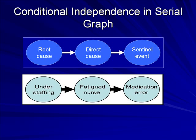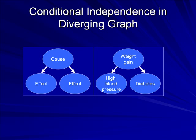Let's look at a slightly more complicated set of causes. This figure shows the proposed causes for medication error: understaffing, and fatigue nurse. Understaffing represents the root cause, fatigue nurse represents the direct cause, while the medication error serves as a sentinel event. These figures illustrate diverging causal structures. A serial structure represents the action of an indirect causal relationship, and a diverging structure represents multiple independent effects of a single cause. In both these cases, the two terminal nodes are conditionally independent of each other given the middle node.